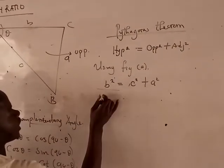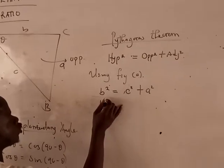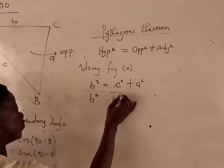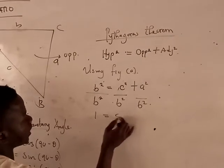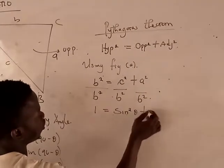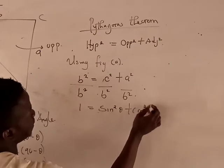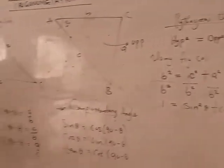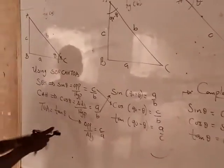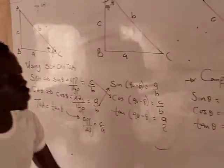So divide both sides by hypotenuse squared, I will have 1 equals sine squared theta plus cosine squared theta. C over B from this value is sine, while A over B is cosine.